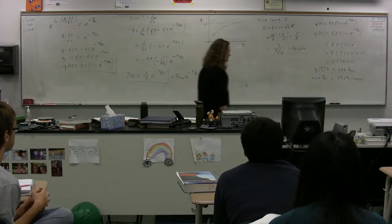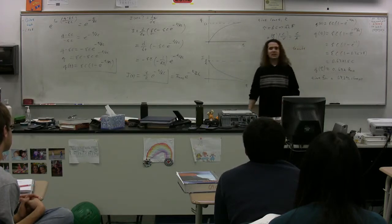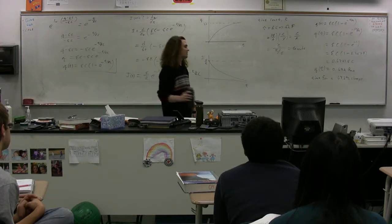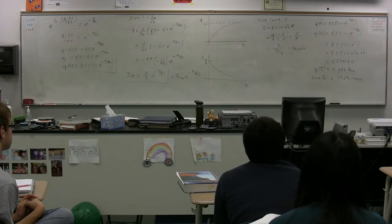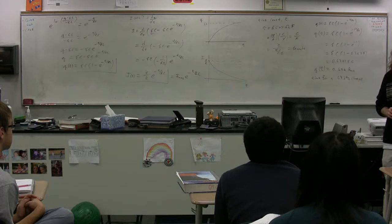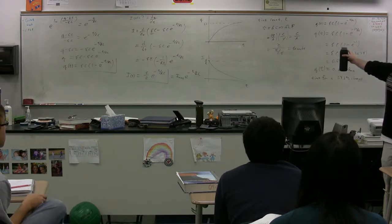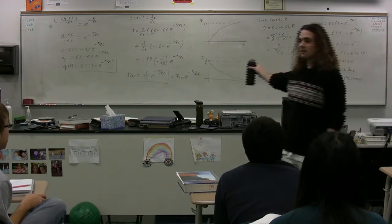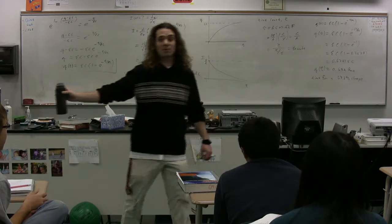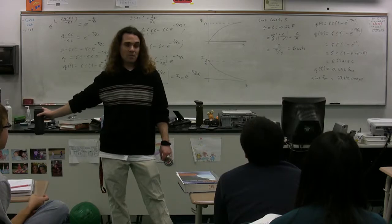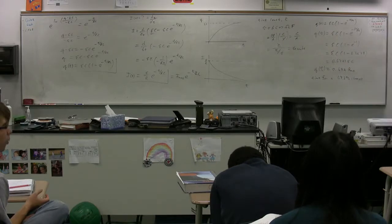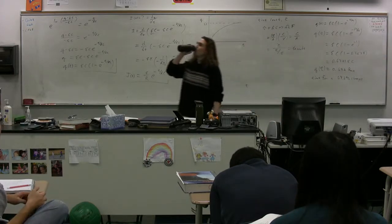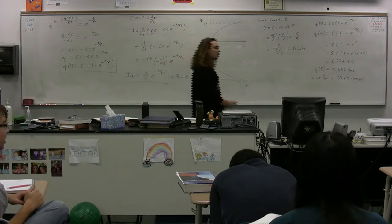Now, I will tell you that this particular number for the time constant is a number that has come up on an AP test, on a free response question, where if you knew this number, you could simply say, oh, that's the time for one time constant, and that's equal to RC, and therefore I can solve for the resistance because I know the capacitance, as opposed to people who derived that whole thing. So, as much as I don't like to say it, this is a number that you need to know. I've shown you how to derive it. It's very simple, right? It's 1 minus e to the negative 1. This comes from the fact that the time constant divided by RC is just negative 1, or just 1.